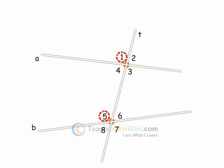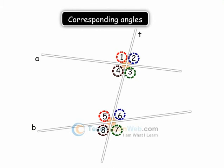Angles 1 and 5, 2 and 6, 3 and 7, 4 and 8 are pairs of corresponding angles.